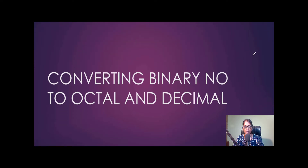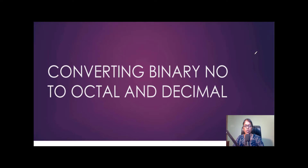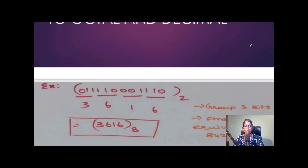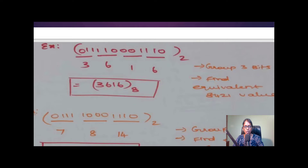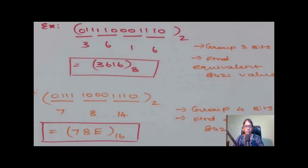Next, we look at converting a binary number to its octal and hexadecimal values. Take the binary number 0 1 1 1 1 0 0 0 1 1 1 0. To convert to octal, there are two simple steps: group the binary digits into groups of three bits, then find the equivalent 8421 value for each group.